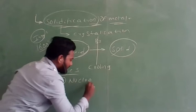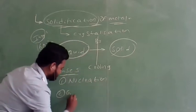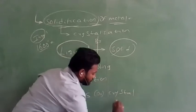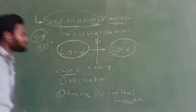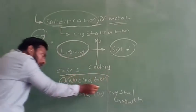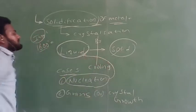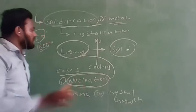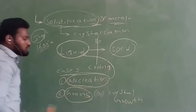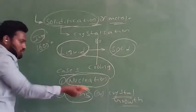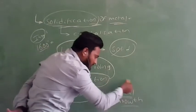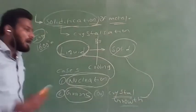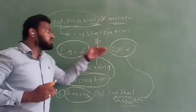There are two cases: nucleation and grains. Grains are also called crystal growth. Nucleation is when the metal is in the liquid state. Crystal growth, or grains, is when the liquid metal is converted to the solid state — it is in the grain state.